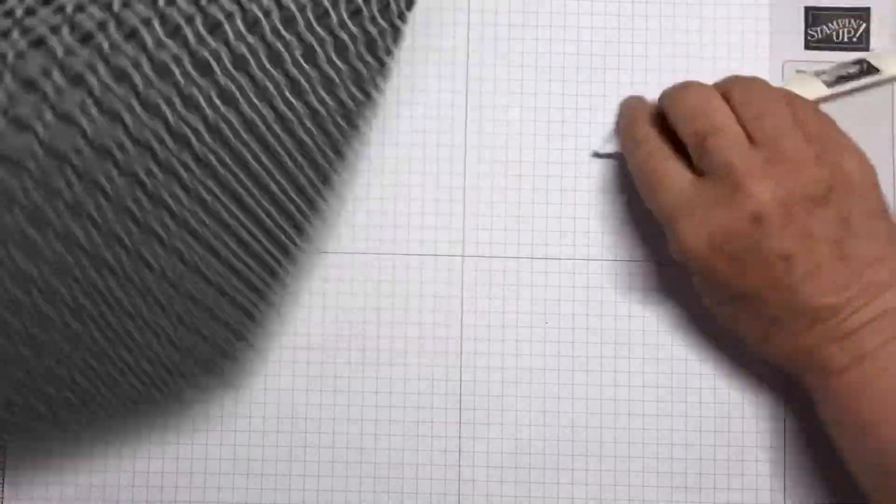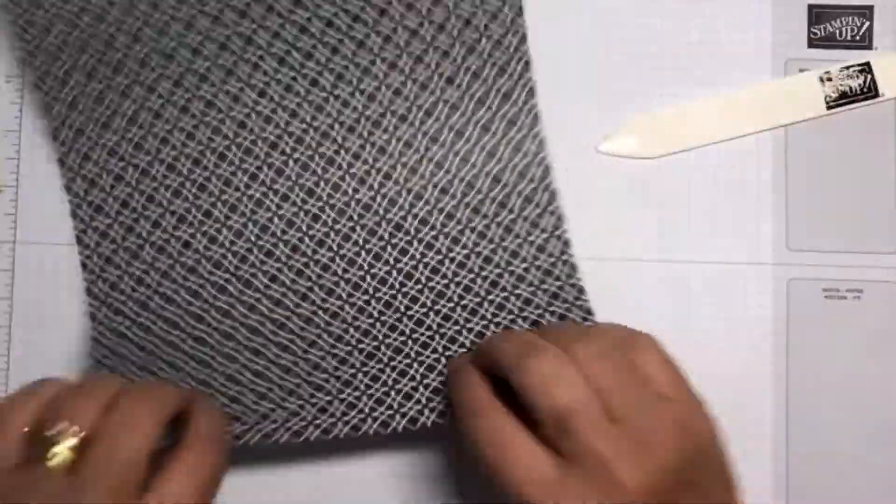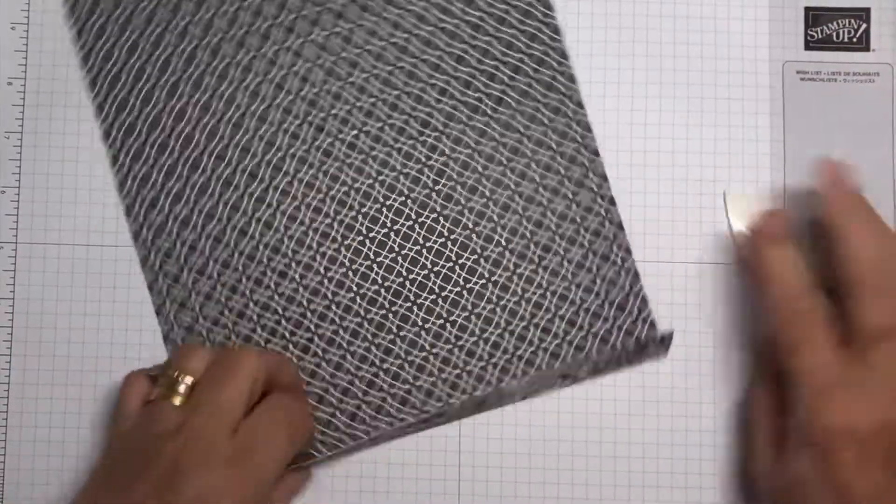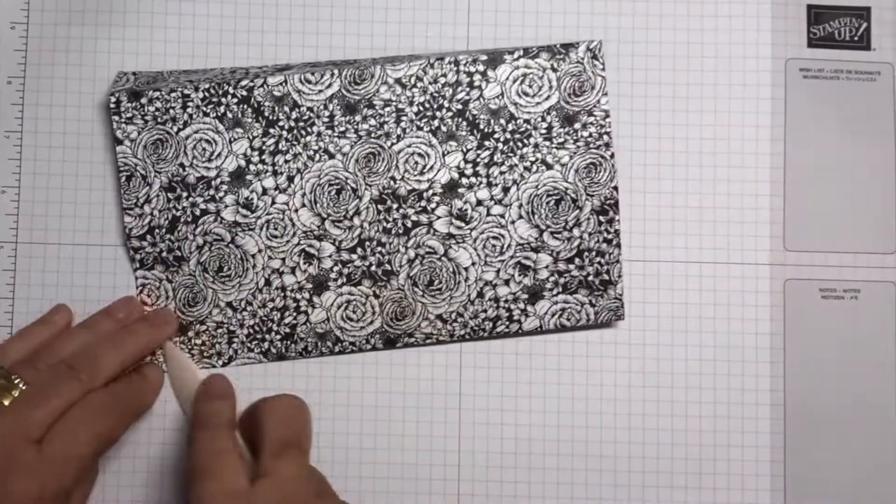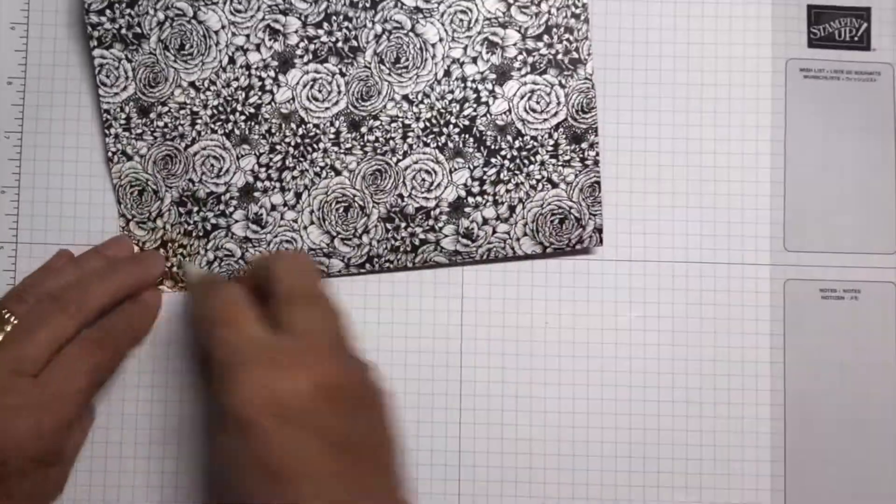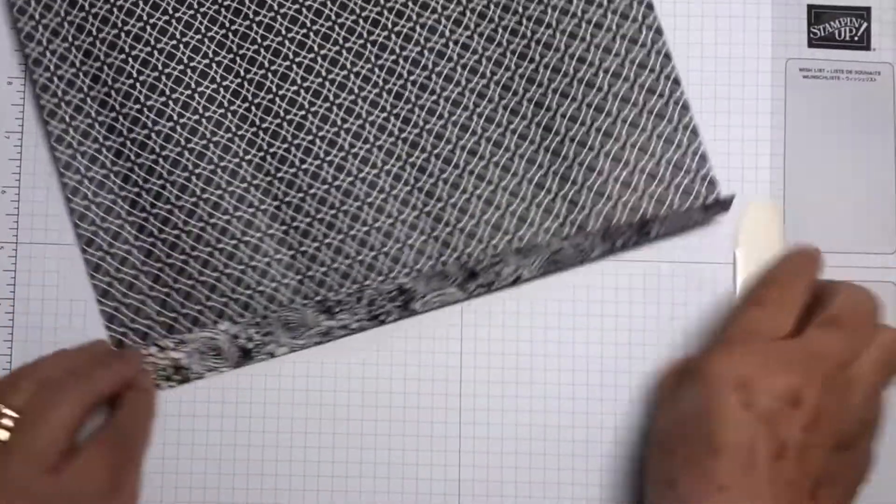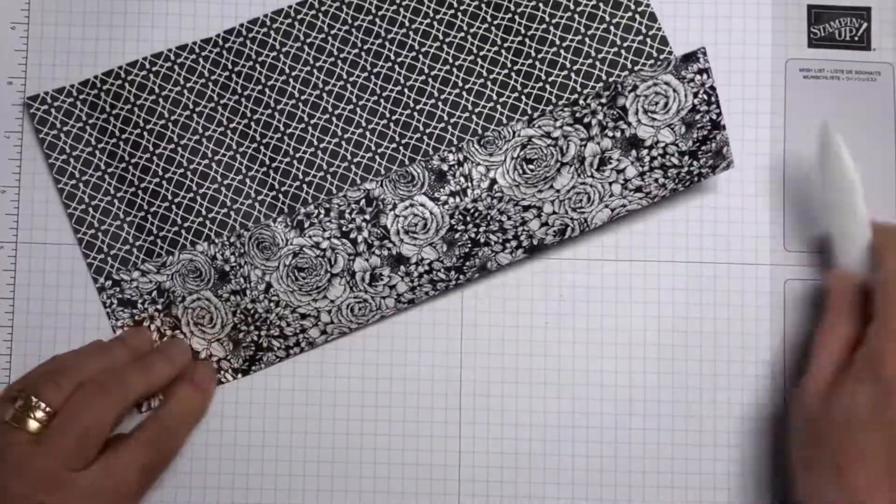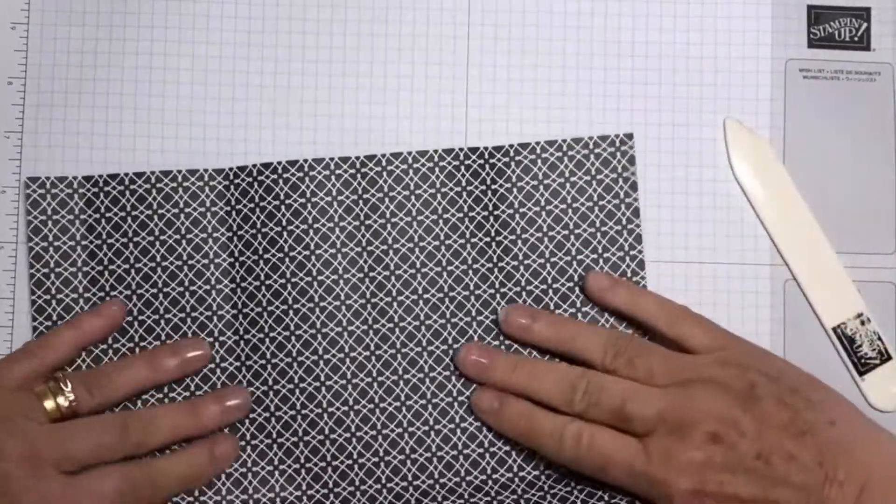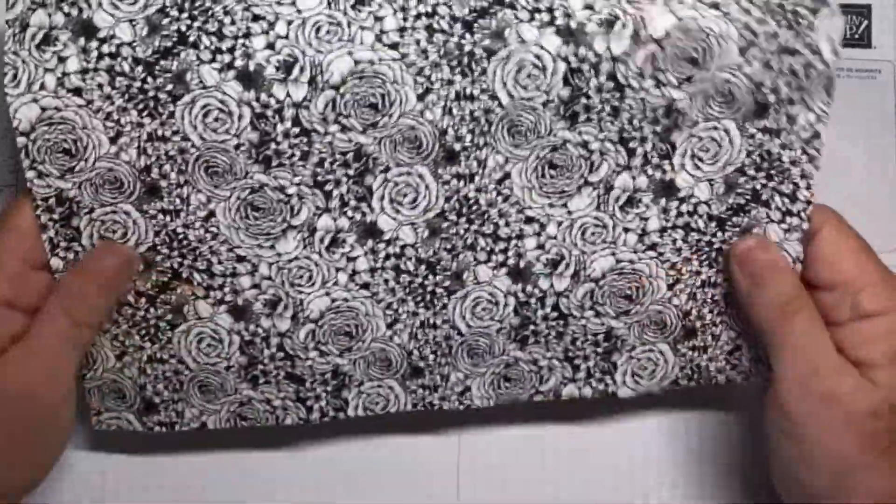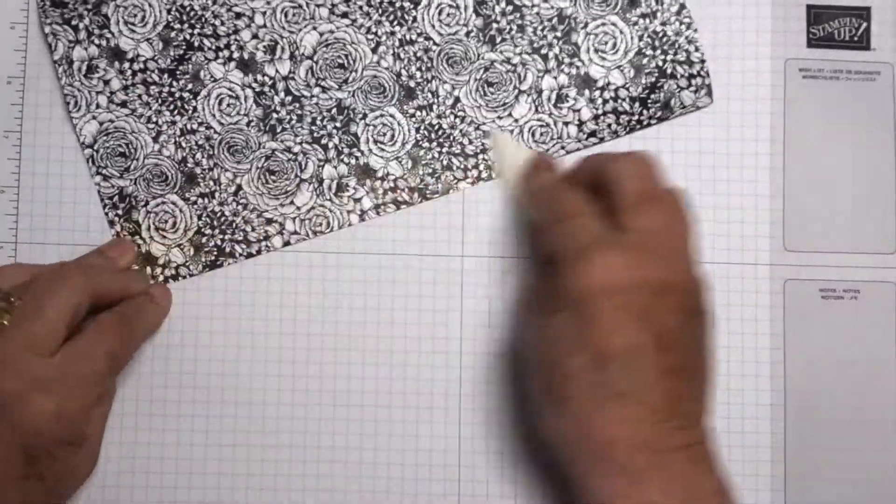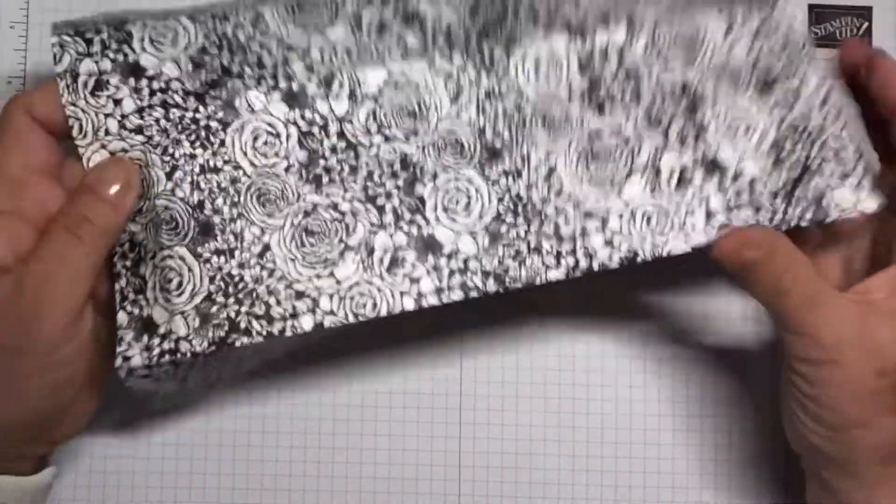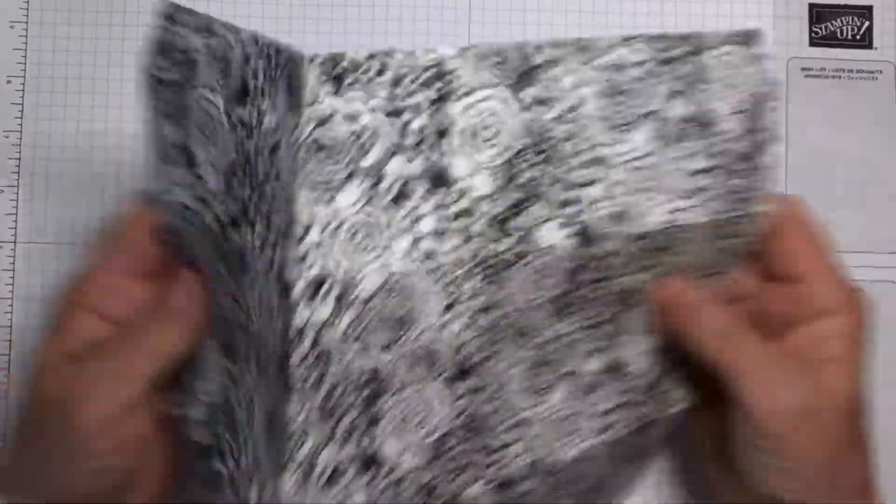So now we need to fold and burnish all our score lines. It's quite a busy paper this. I think we've got them all.